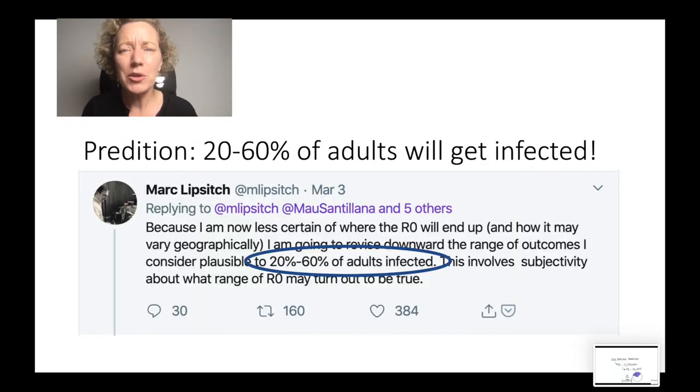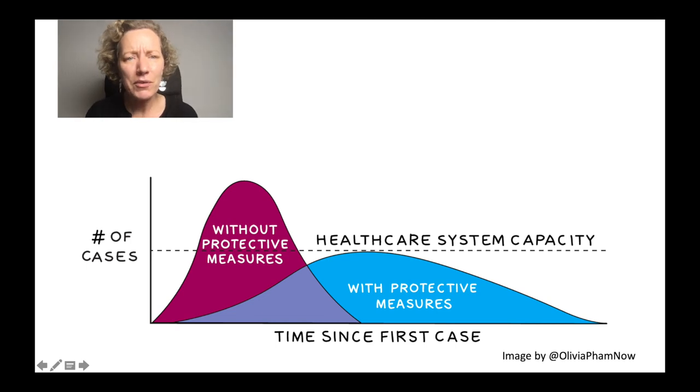Epidemiologists expect that ultimately 20 to 60% of us will get the coronavirus. So my 1% example is really quite conservative. But if we reduce R0 by washing our hands and cancelling events, we can flatten the curve. And history shows that this is really possible.